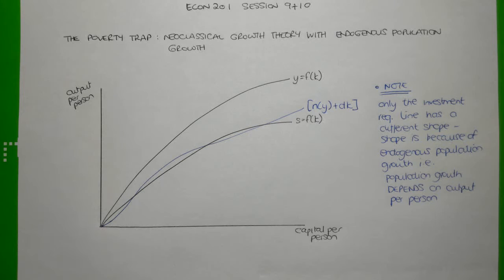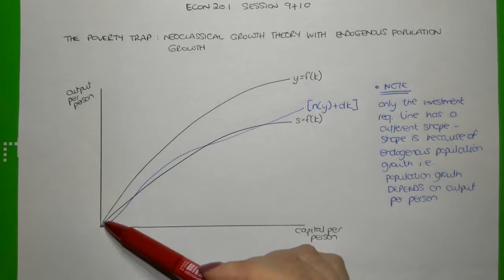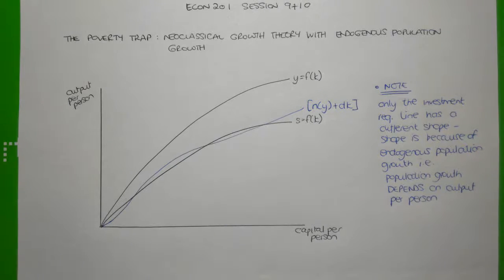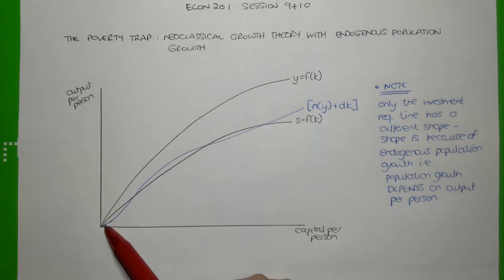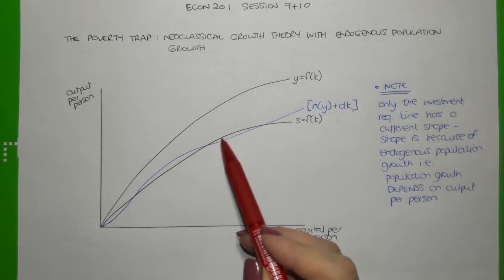To see how it works, we draw our neoclassical growth model diagram. On the horizontal axis, we're measuring capital per person. On the vertical axis, we're measuring output per person. Like with the standard neoclassical growth theory, the production function has a concave shape, or is bowed out, indicating that as capital per person increases, output per person increases at a decreasing rate. The savings function follows the same shape as the production function.